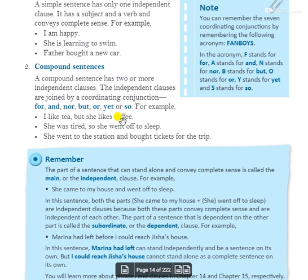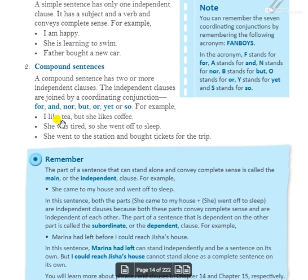For example: 'I like tea but she likes coffee.' Here we have two independent clauses — 'I like tea' and 'she likes coffee' — joined by 'but', making it a compound sentence. Second example: 'She was tired so she went off to sleep' — two clauses joined by 'so'.